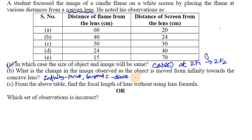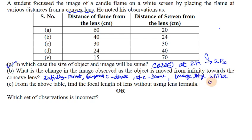At C, the image is the same size as the object. As the object continues moving closer toward the lens, the image size will increase — the image becomes magnified.